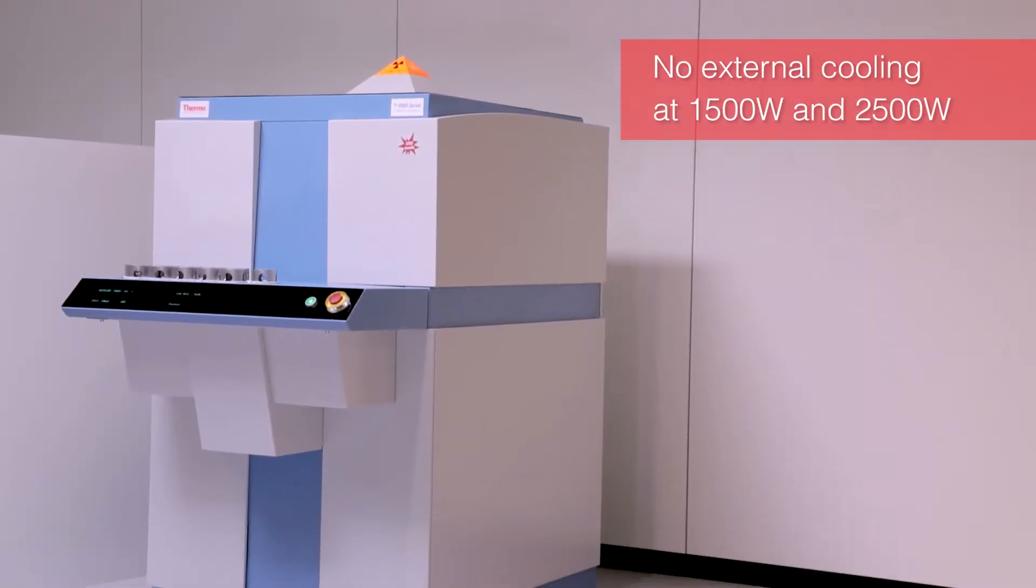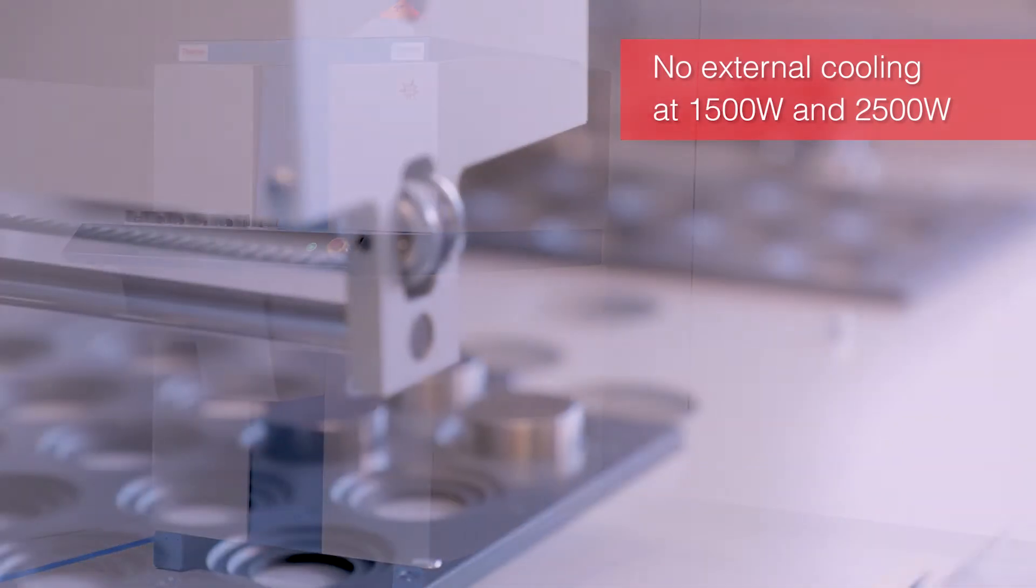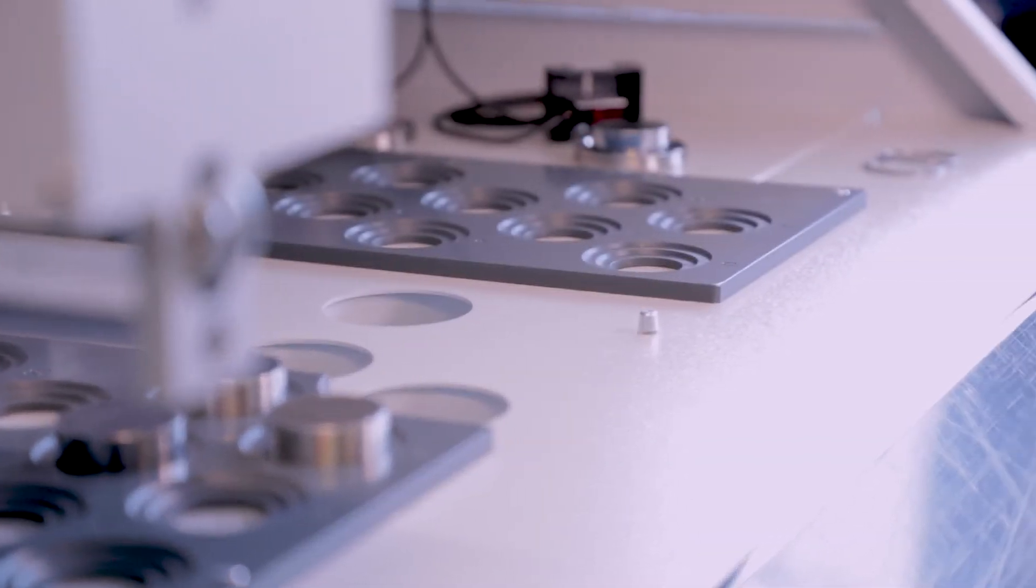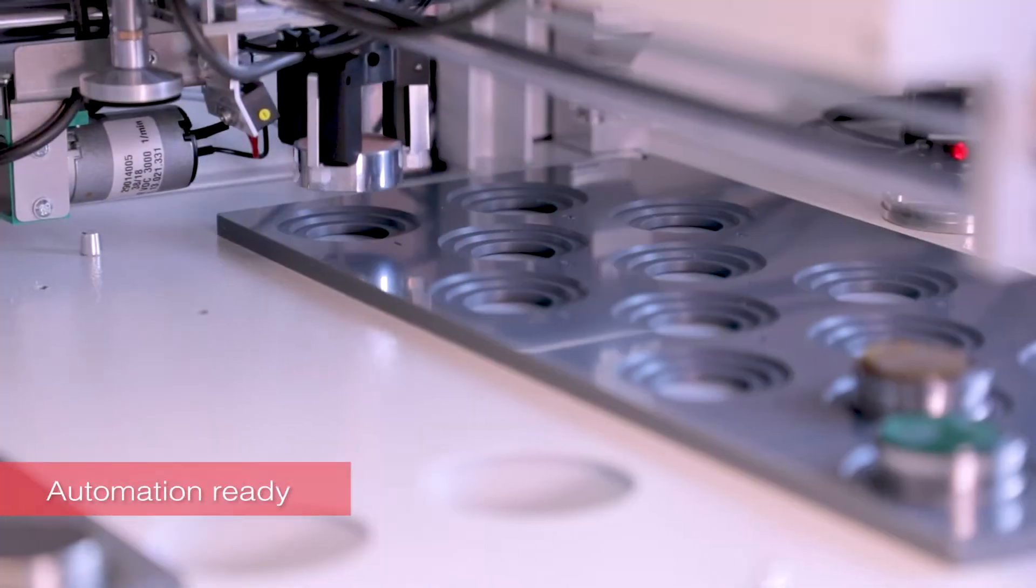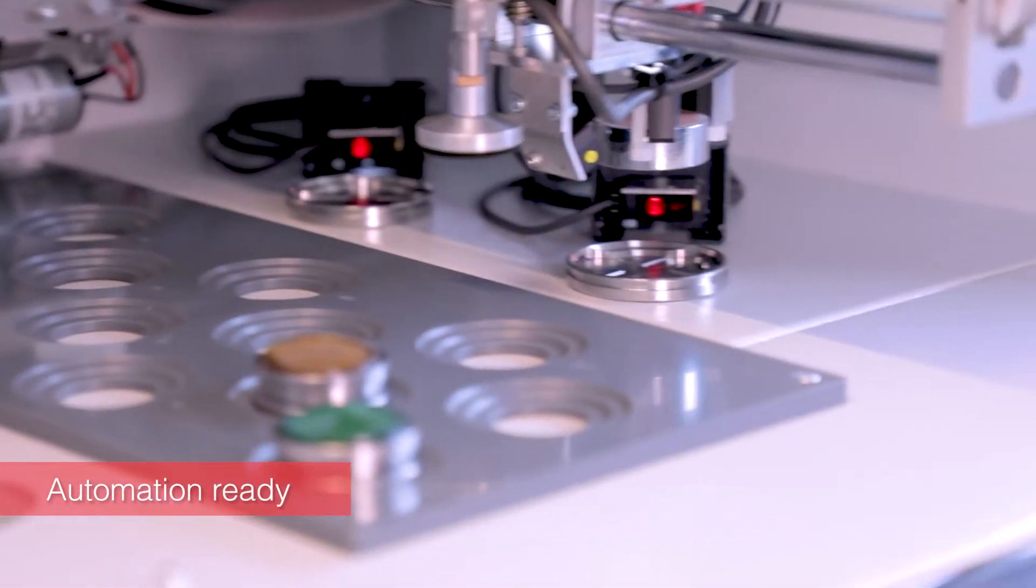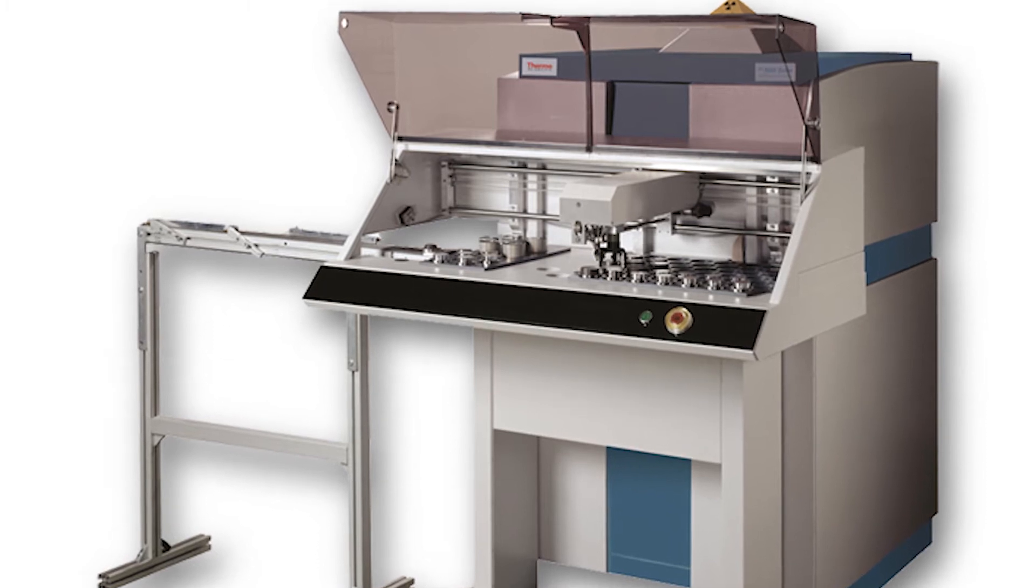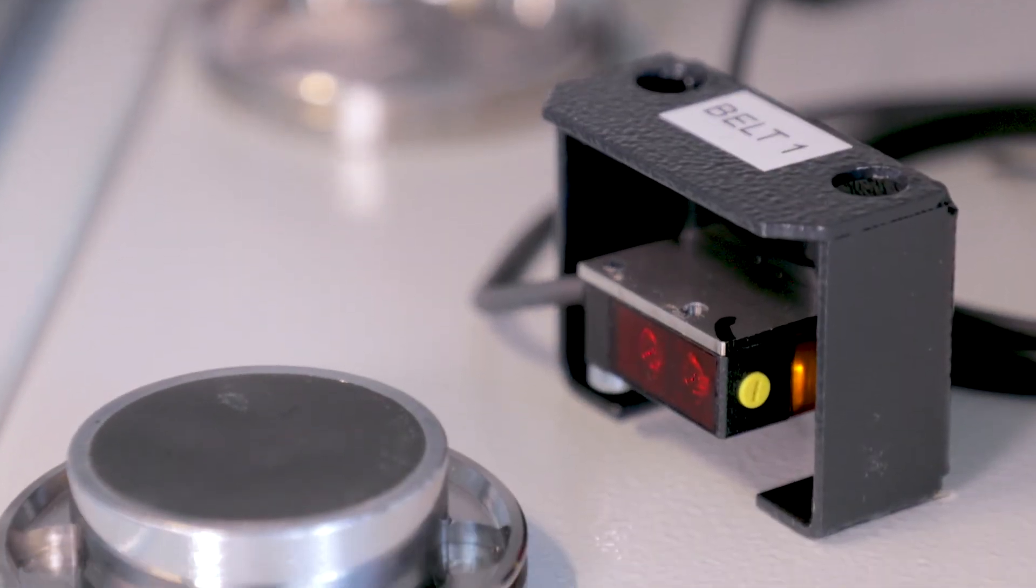Installation requirements are straightforward and can be easily accommodated in most industrial environments. A high degree of automation and digital control make the ARL 9900 easy to use. It can be programmed to conduct continuous process monitoring in unattended mode, with direct connection to automatic sample preparation machines.